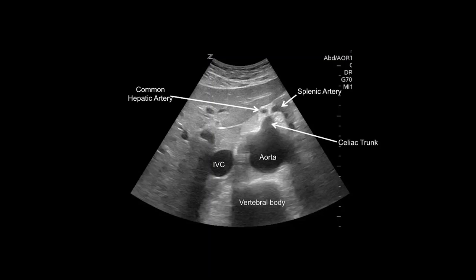The two branches arising from the trunk are the common hepatic artery and the splenic artery. Follow the proximal aorta superior and inferior in transverse orientation until you visualize the celiac trunk and its branches. Additionally, notice the relationship of the aorta to the spine and IVC.